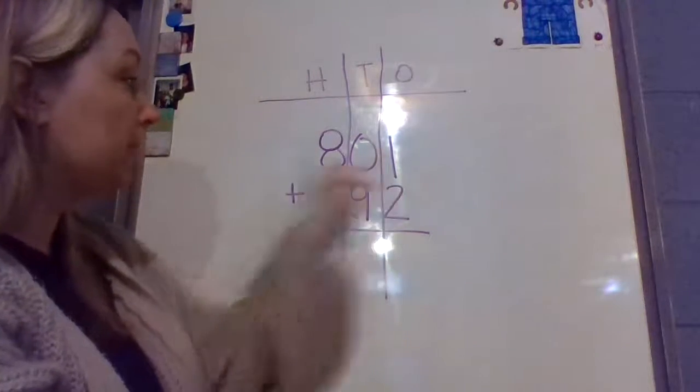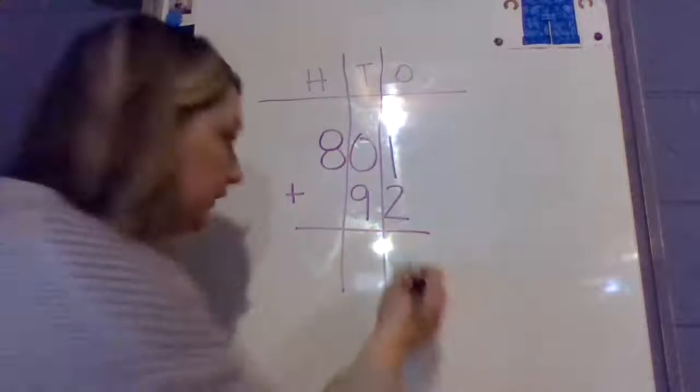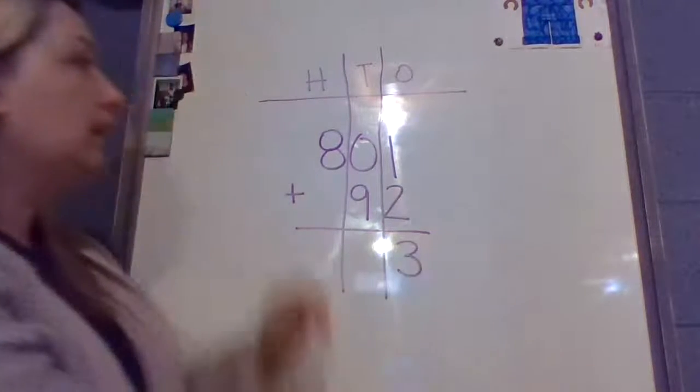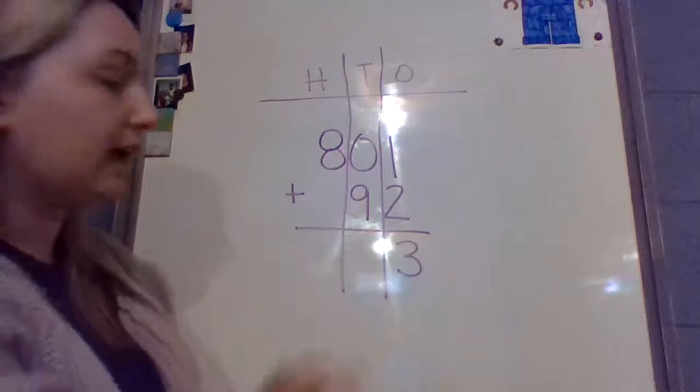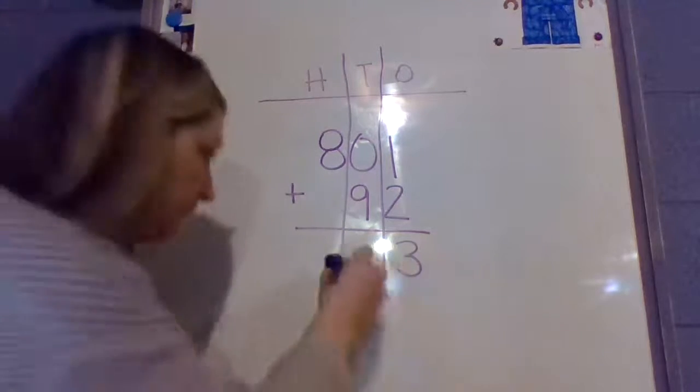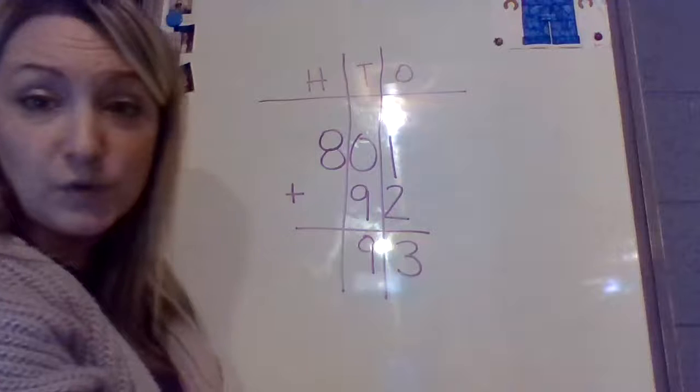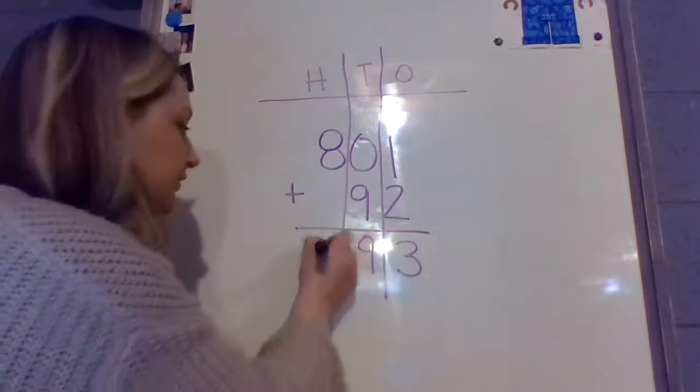1 plus 2 equals 3. Very good. Moving to our 10's column. 0 plus 9 equals 9. Very good. And finally, 8 plus nothing equals 8. Very good.